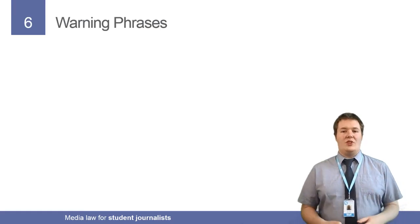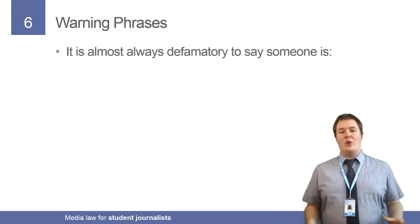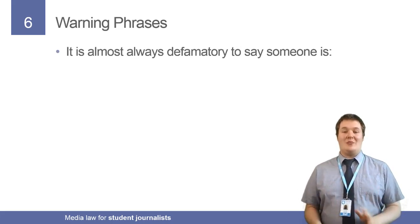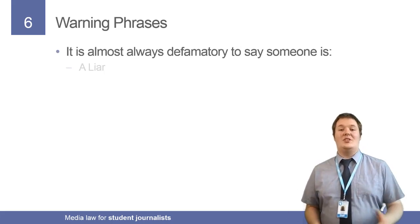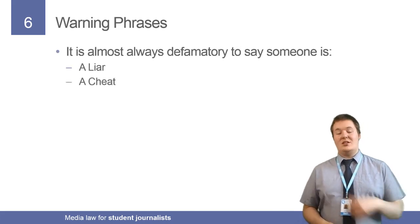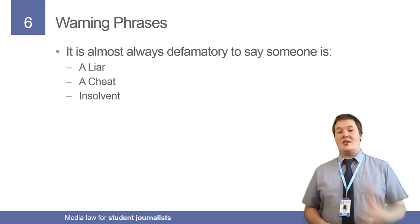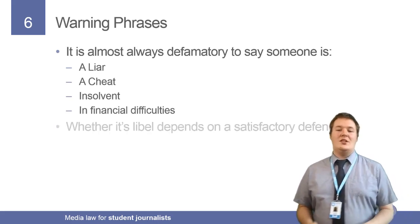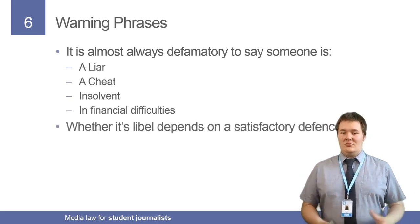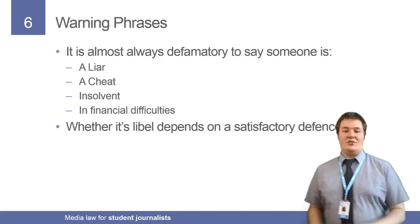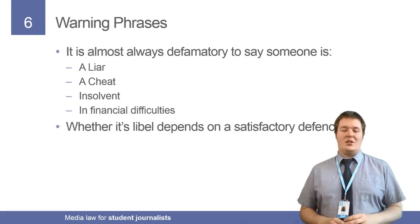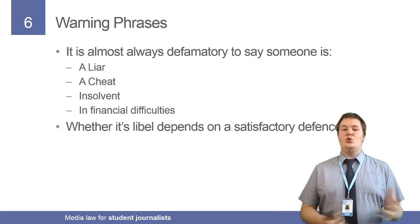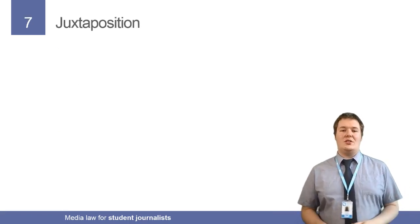The warning phrase is: it is virtually always defamatory to say of someone that they are a liar, that they are a cheat, that they are insolvent, or that they are having financial difficulties. Whether it's libel depends on whether you have a satisfactory defence, which we'll come on to in a moment. But unless you've got proof, it's usually always defamatory to say those things.